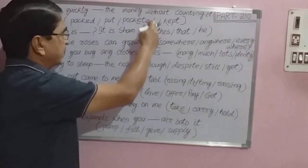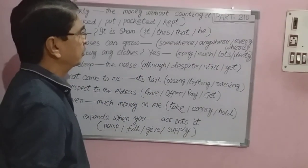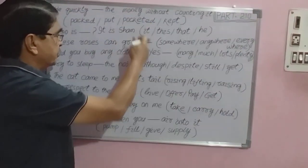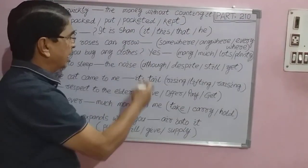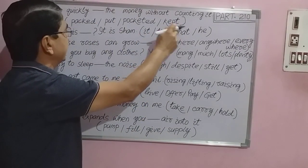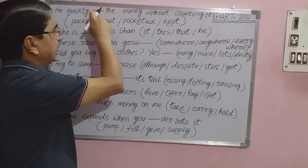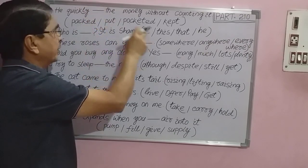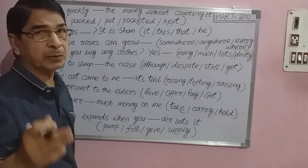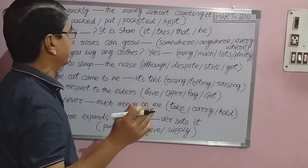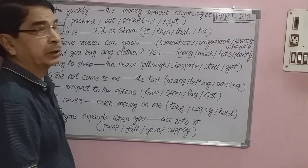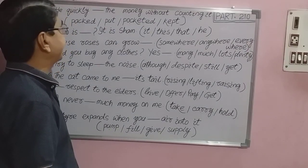This exercise includes a vocabulary exercise. All the questions are word-related questions. One sentence is given, a blank has been left, and four options are given. Four alternatives will be given for you — you have to select the correct one to fill in the blank.